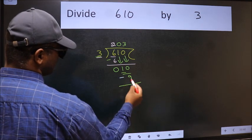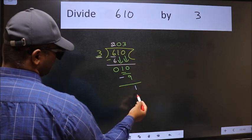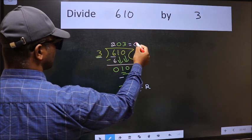Now we should subtract. We get 1. No more numbers to bring down, so we stop here. This is our remainder and this is our quotient.